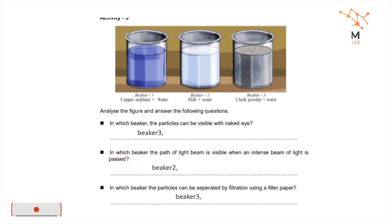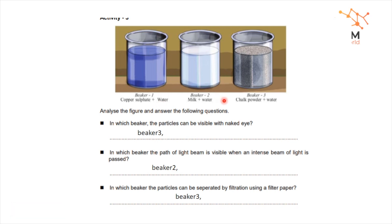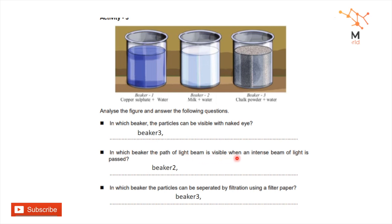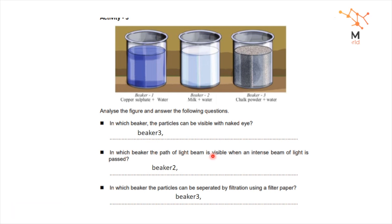Now we have three beakers and we will talk about related questions. The first is copper sulphate, the second is milk, and the third is chalk powder. In which beaker is the path of a light beam visible when an intense beam of light is passed?